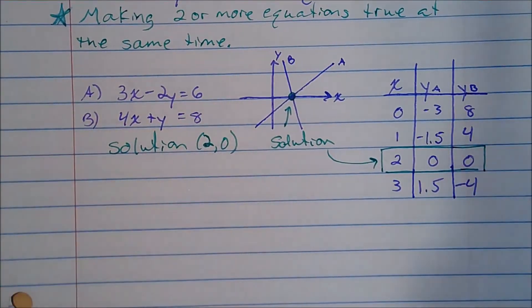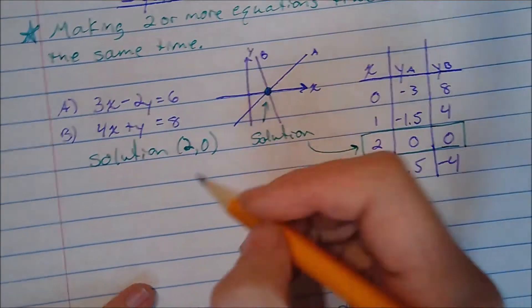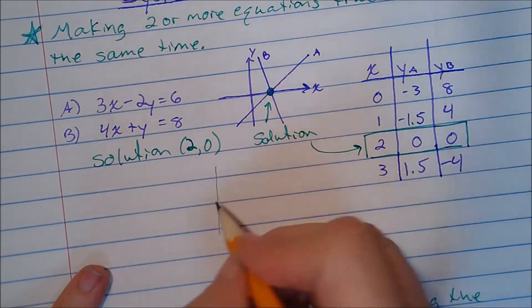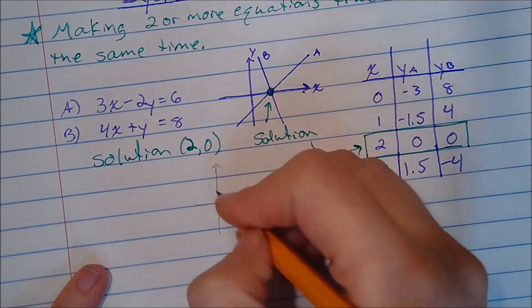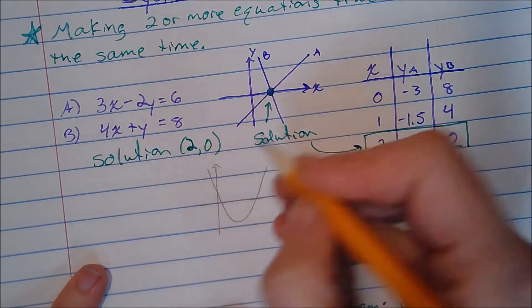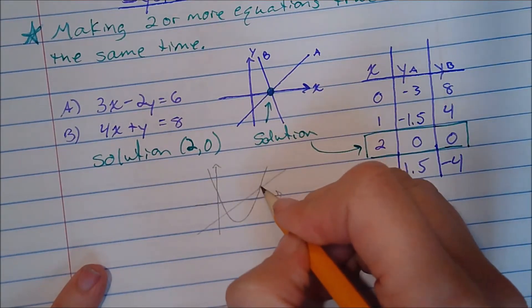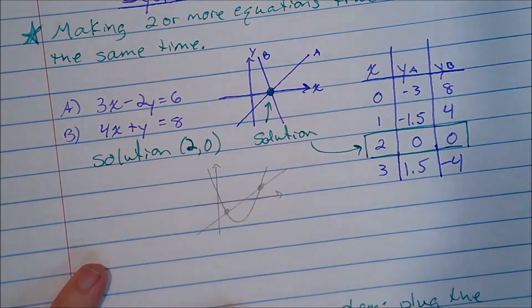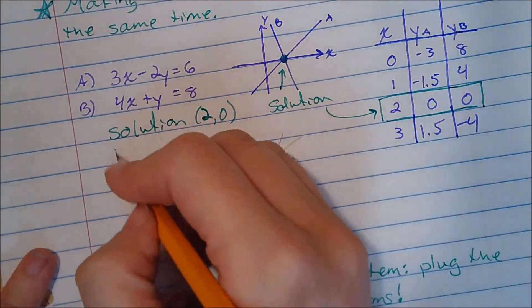Your system might look all sorts of ways. It could be totally crazy. You could have a system that's not even linear. Like you could have a quadratic here and then a linear, and then you've got two solutions on that one.